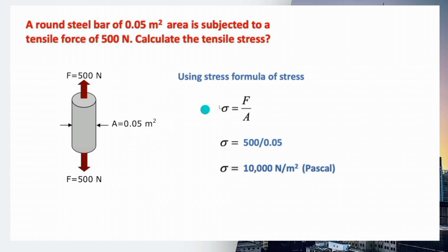To solve the tensile stress, we use the formula: stress equals force over area. Taking our values, we have 500 Newton over 0.05 meters squared, which equals 10,000 Newton per meter squared.